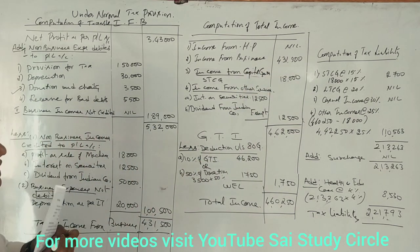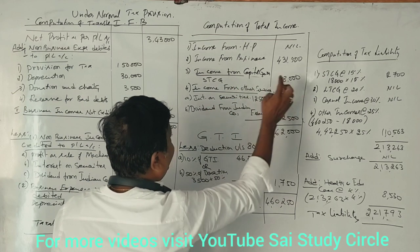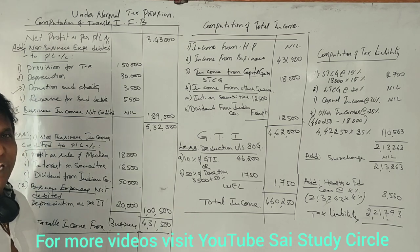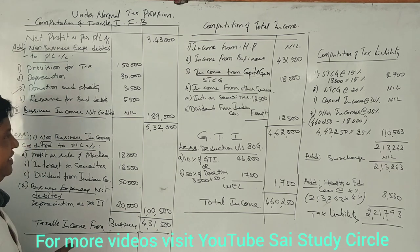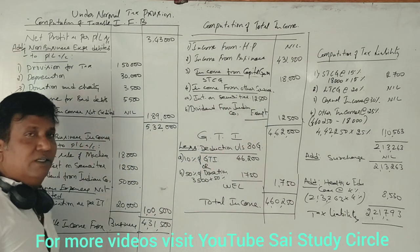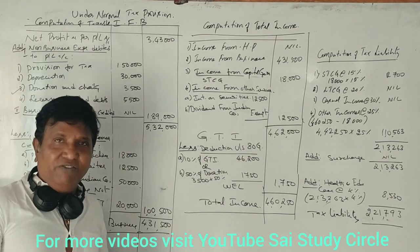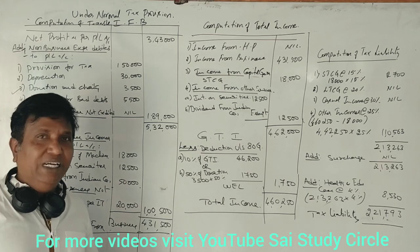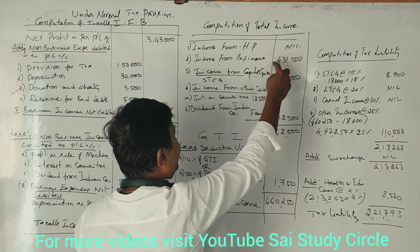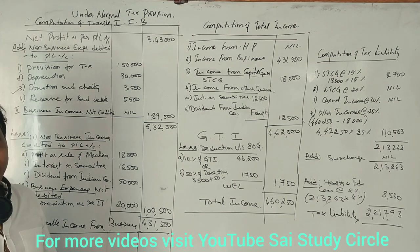Income from capital gains: we have a short-term capital gain of 18,000 from the sale of machinery. Machinery is a depreciable asset; any profit on sale of a depreciable asset is short-term capital gain. Income from other sources: we have two items — interest on securities, which is taxable, and dividend from an Indian company of 50,000, which is exempted. As studied in income tax, dividends from a domestic Indian company are exempt from tax. Total income from other sources is 12,500. From all four heads, gross total income is 4,62,000.